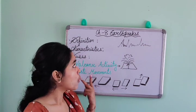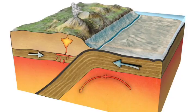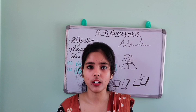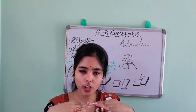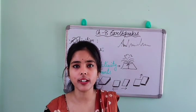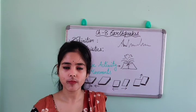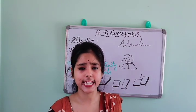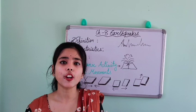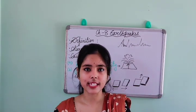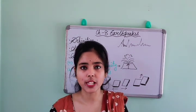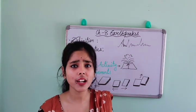Number two: why does earthquake take place? Because it is caused due to the movement of the plates. You have learnt about plates in your chapter on landforms. When the plates move, they come closer or go away from each other, and this causes earthquake. Number three: earthquake is unpredictable. We cannot say in which particular phase earthquake will take place.